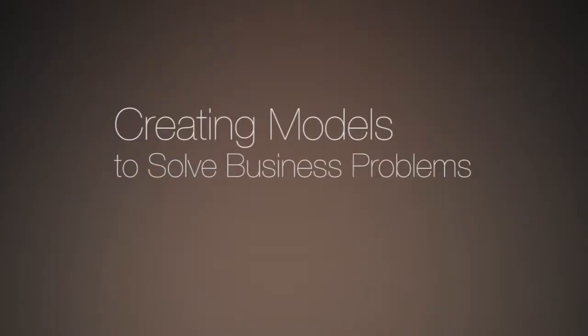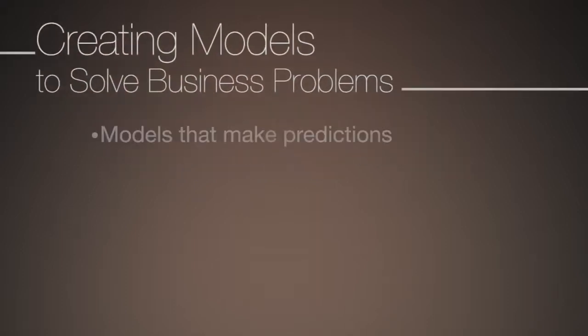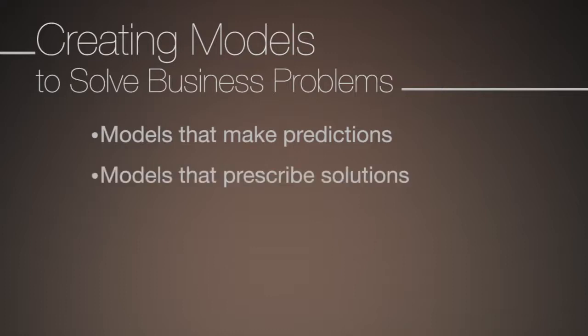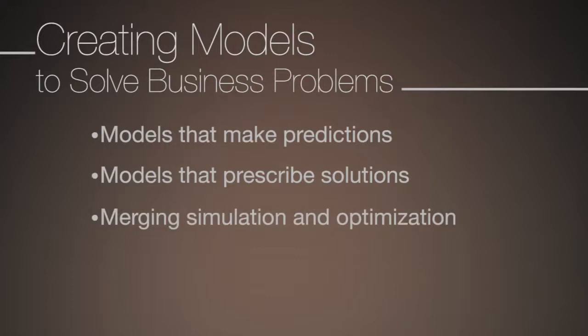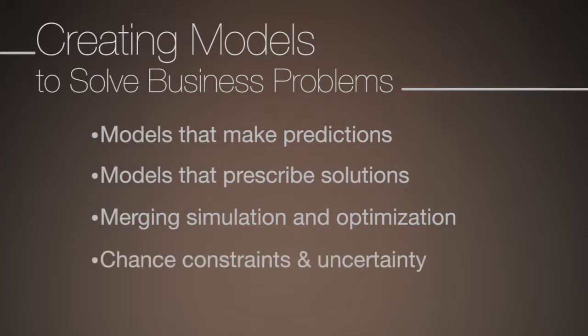Throughout this course, you have learned how to use data to create models that help you solve a variety of problems in business. We started with models to make predictions, and then moved to models that prescribe solutions. In the previous video, we introduced the idea of merging two analytic technologies, simulation and optimization. By setting chance constraints, we were able to account for the uncertainty in some key input data to an optimization model. In this video, we are going to build on that and describe how simulation and optimization can be fully integrated.